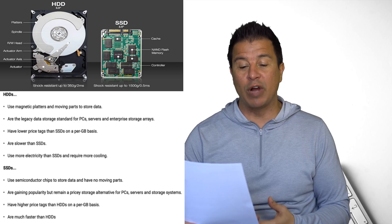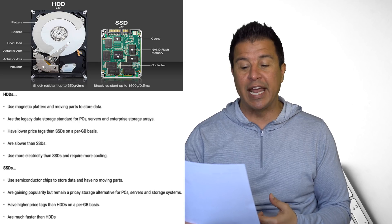Let me pull this out so you can get the verbatim Wikipedia definition of what a hard drive is. A hard disk drive is an electro-mechanical data storage device.